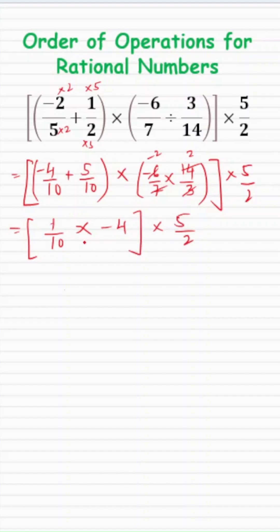Now 1 tenth multiply by negative 4 and my answer is negative 4 over 10 multiply by now this finally 5 over 2. So this can cancel and this can cancel. So my answer is negative 2 divided by 2 and of course that is equal to negative 1.